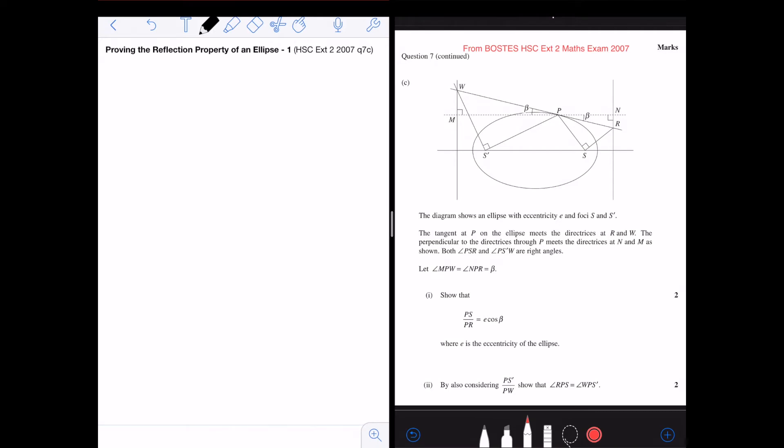The reflection property is talking about the tangent at P. That's the tangent at P, which will be equally inclined to the focal chord through P. There are two focal chords through P, and the angle between this and that will be equal. So that's the reflection property.